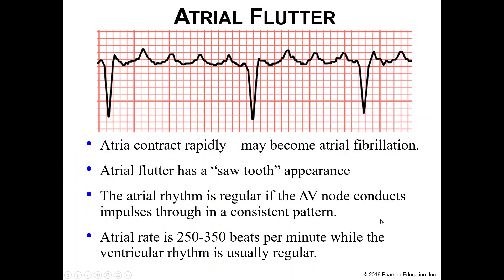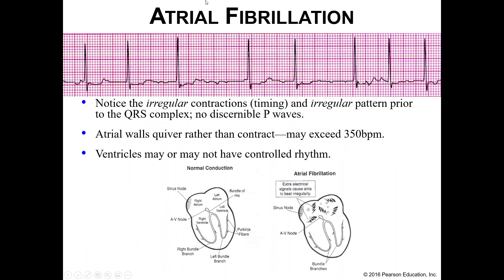Atrial flutter — the atria contract rapidly, and this could turn into atrial fibrillation. The EKG has a sawtoothed appearance, like the teeth of a hand saw. The atrial rhythm is regular if the AV node conducts impulses in a consistent manner. The atrial rate is 250 to 350 beats per minute, while the ventricular rhythm is usually regular. So the atria have essentially lost control while the ventricles continue to beat at a normal rhythm.